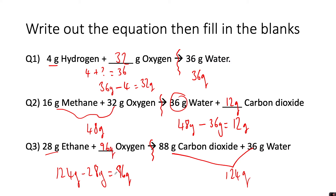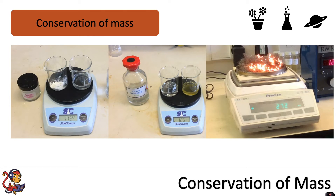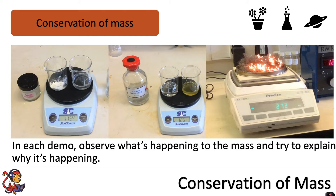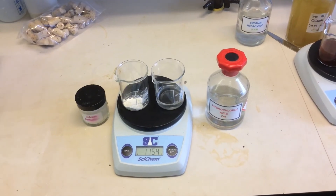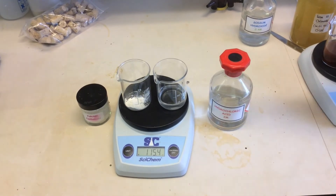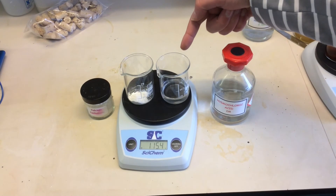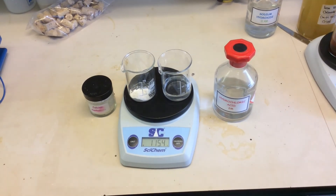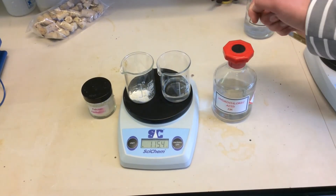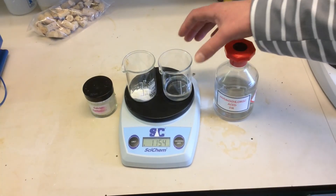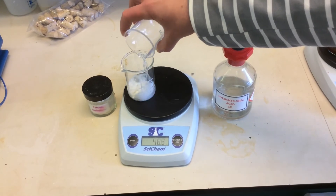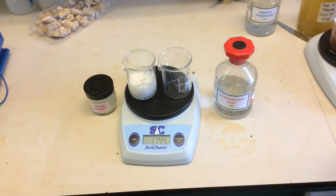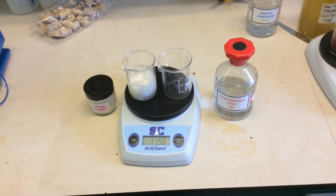Well done if you got all three correct. Now I'm going to show you three demonstrations to develop your understanding of conservation of mass. In each demo, observe what's happening to the mass and try to explain why. In this first demonstration we've got two beakers on a balance — 25 grams of calcium carbonate and 25 mils of 2 molar hydrochloric acid. The reading on the balance is 115.4 grams. I'm going to add the hydrochloric acid into the calcium carbonate — observe what happens to the mass.